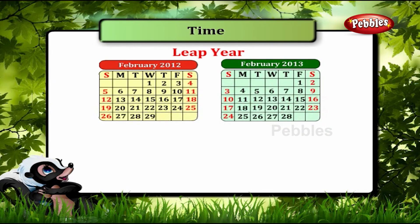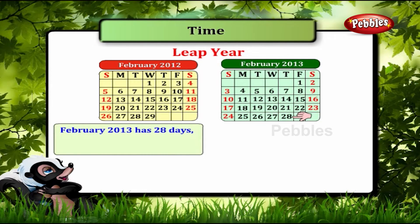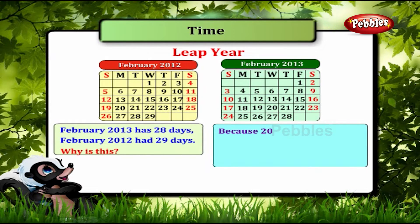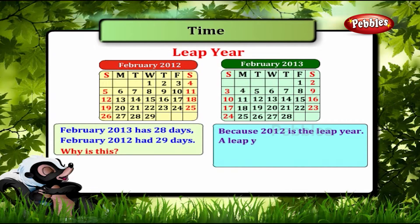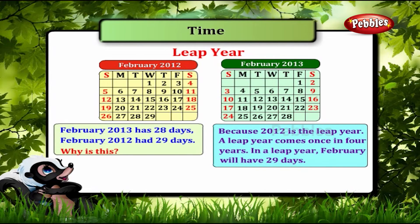Now look at these monthly calendars. February 2013 has 28 days, but February 2012 had 29 days. Why is this? Because 2012 is the leap year. A leap year comes once in four years and in a leap year February will have 29 days.